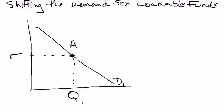Hi everyone. In this short video I just want to explain why the demand curve for loanable funds will shift either to the right or to the left. That's the terminology I'm going to use — try to avoid using up or down because that can become confusing when you get to supply curve shifts.